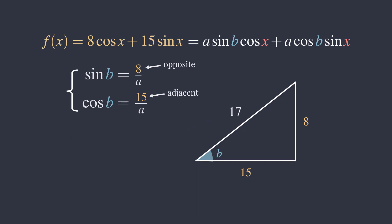So, sine of b is 8 over 17, and cosine of b is 15 over 17. Dividing sine of b by cosine of b, tangent of b is 8 over 15. So, the angle b is tangent inverse of 8 over 15.